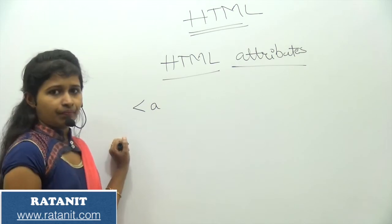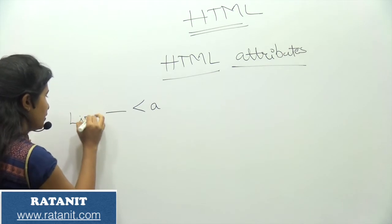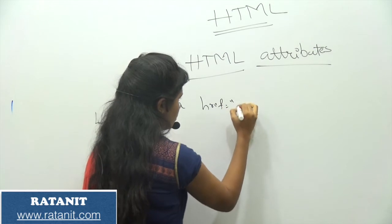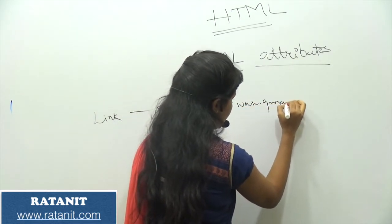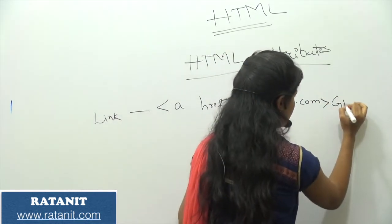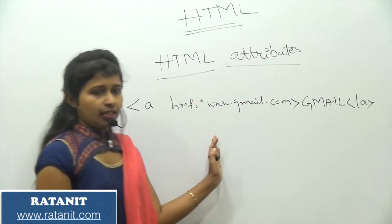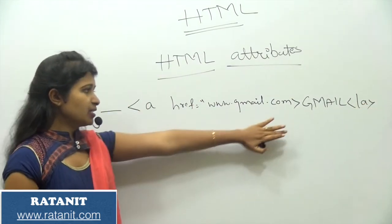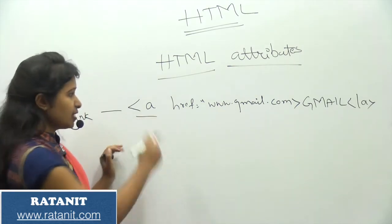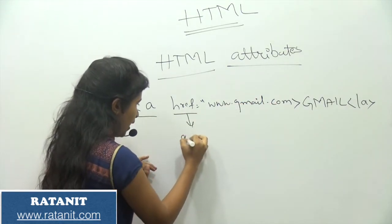Let's suppose I am having an anchor tag which I am using for a link purpose. I am using: a href equals www.gmail.com, then closing the anchor tag. I need it to print 'gmail' over here. If I want to display any link, this is the basic structure I follow. Here, 'anchor' is my tag, and 'href' is my attribute.